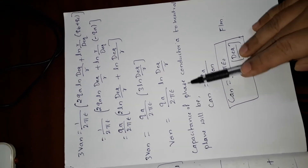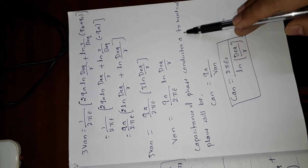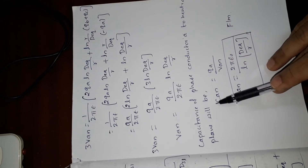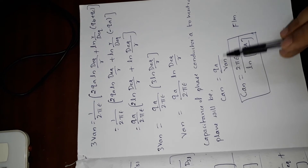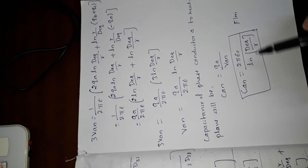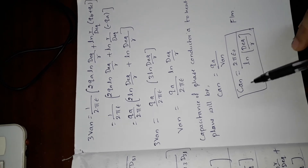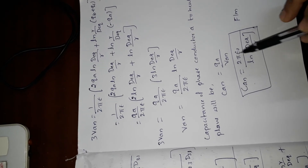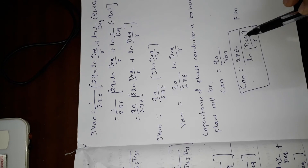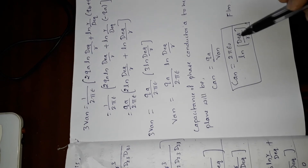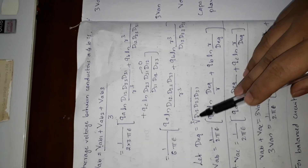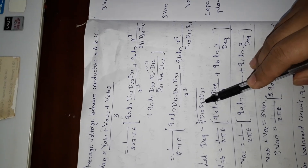From this equation, write the capacitance of the phase conductor to the neutral. It will be C_an = qa / V_an. So the final equation is C_an = 2πε / ln(D_eq / r), where D_equivalent is the cube root of d12, d23, and d31.